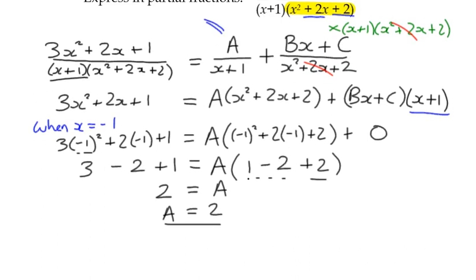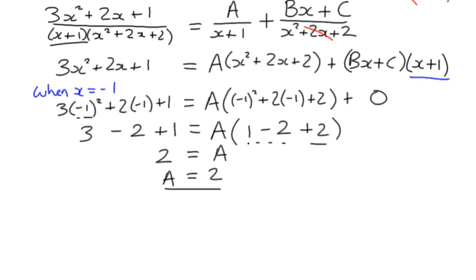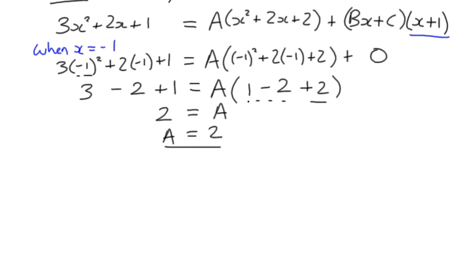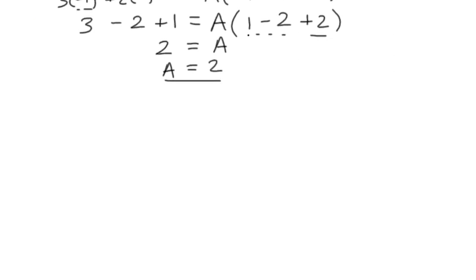I've got the first of my values here. So I want to try and then find one of the other ones. If you notice here, again back up in the original equation, that our b term here is multiplied by x. If I set x equal to 0, then the b term will disappear. And now that we know what A is, we could probably work out what C is.